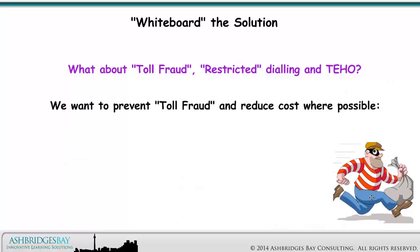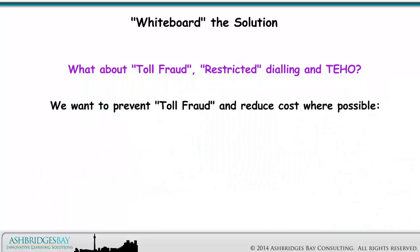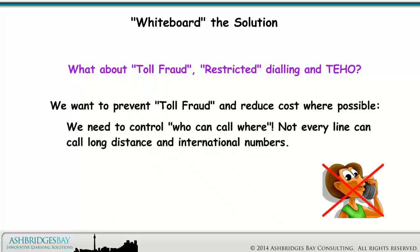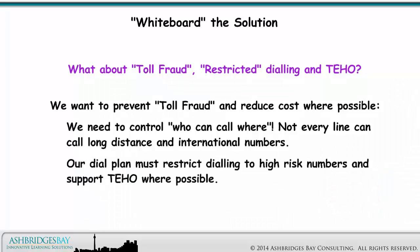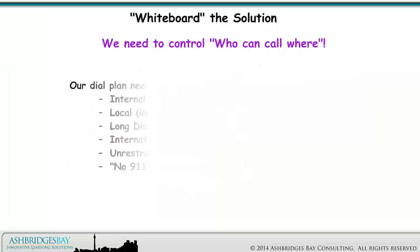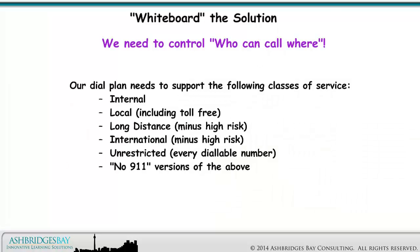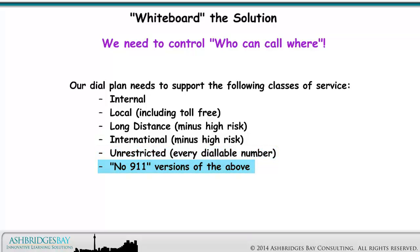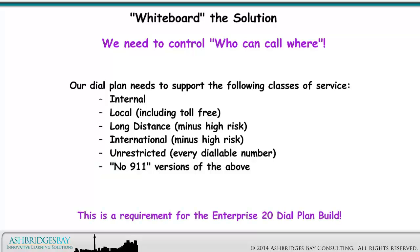We want to prevent toll fraud and reduce costs wherever possible. We need to control who can call where — not every line can call long distance and international numbers. Our dial plan must restrict dialing to high-risk numbers and support TAHO where possible. Our dial plan needs to support the following classes of service: internal, local including toll free, long distance minus high risk, international minus high risk, unrestricted, every dialable number, and no-911 versions of the above. This is a requirement for the Enterprise 20 dial plan build.